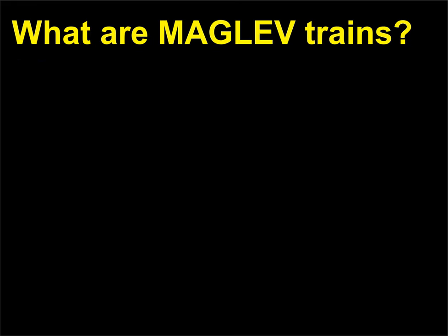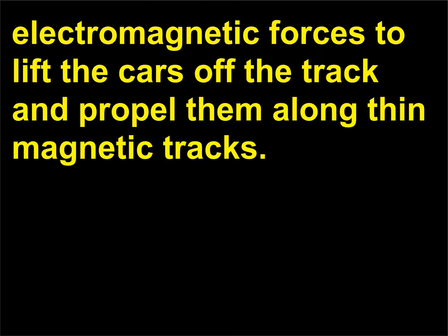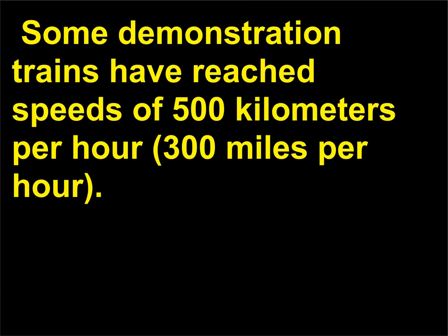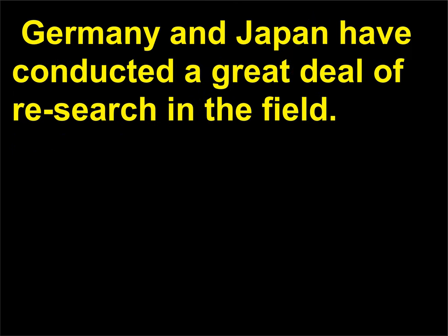What are maglev trains? Maglev, or magnetically levitated trains, are different from conventional trains in that they use electromagnetic forces to lift the cars off the track and propel them along thin magnetic tracks. Some demonstration trains have reached speeds of 500 kilometers per hour (300 miles per hour). Although the United States has no maglev train nor an active research program in this technology, Germany and Japan have conducted a great deal of research in the field.